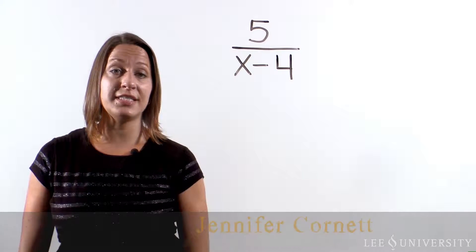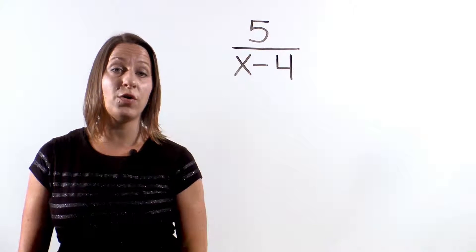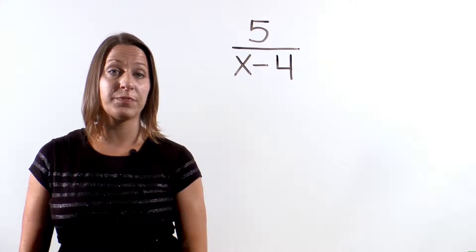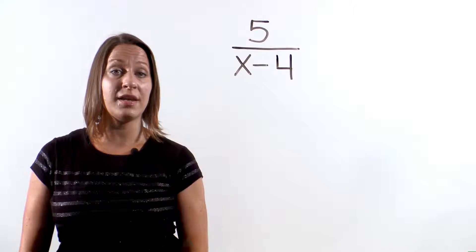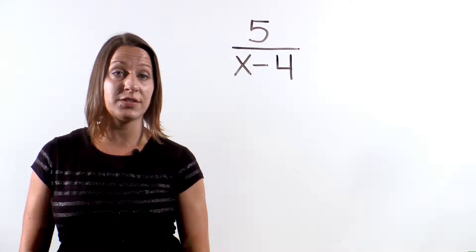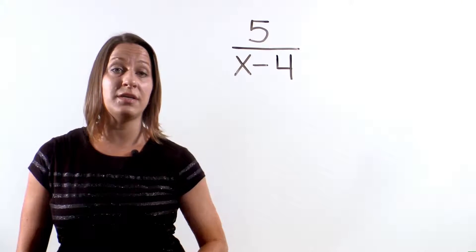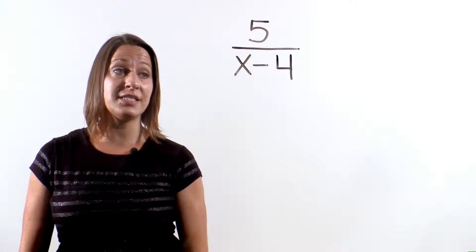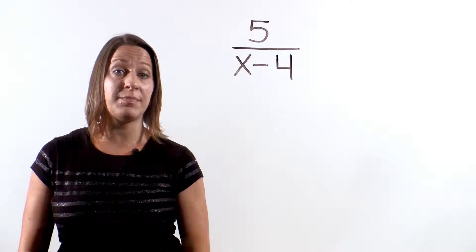Let's take a look at this example. We have 5 over x minus 4. We are going to find the domain of this expression. The domain is all of the possible values that x could be that still makes this problem a true statement.